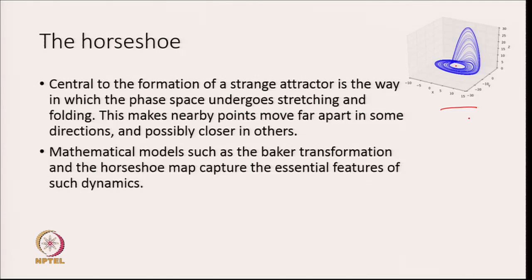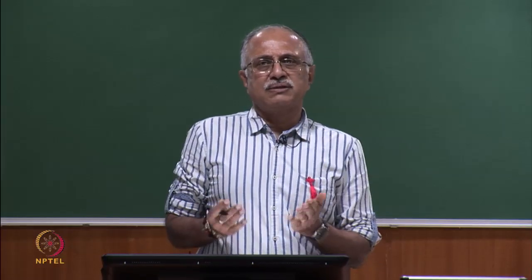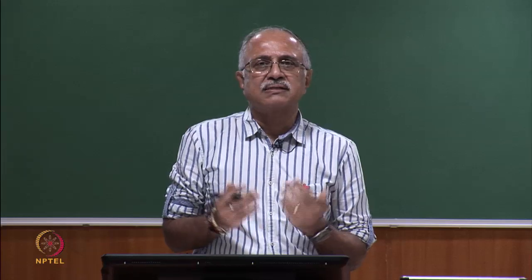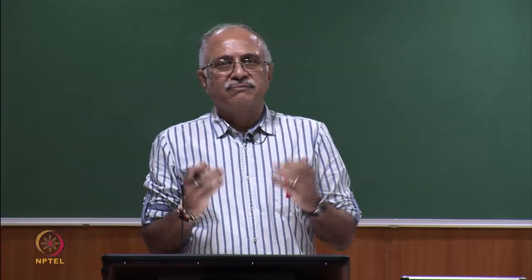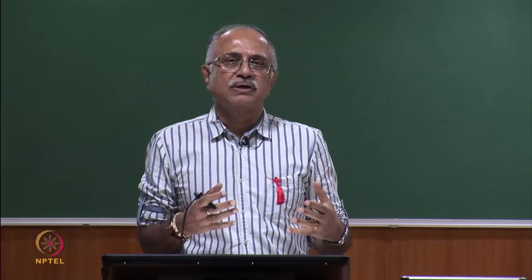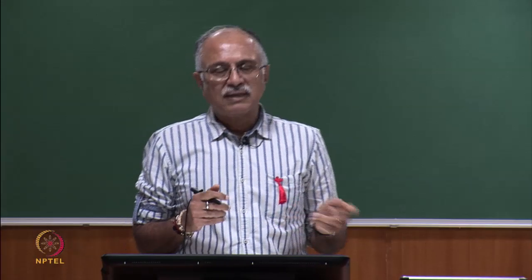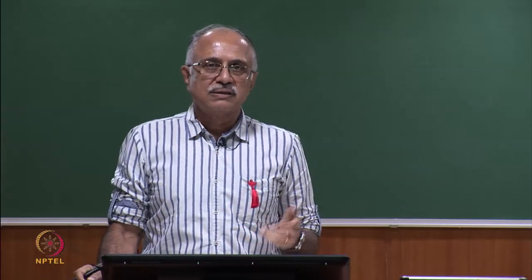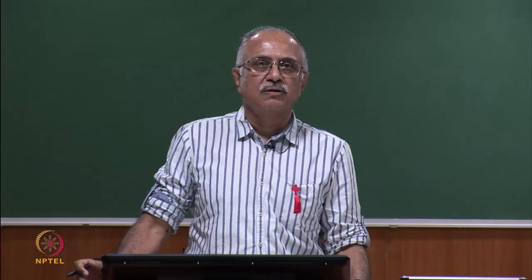Central to the formation of a strange attractor is the way in which phase space undergoes stretching and folding. We saw simple examples of that in the image of the Taffy machine. The way in which phase space dynamics occurs in this kind of dynamical system is that volumes get bent over and then stretched apart, so that nearby points can move very far from each other, even though they may move closer in other directions. Two important models we will discuss today are the Baker transformation and the horseshoe map.